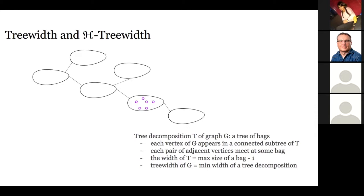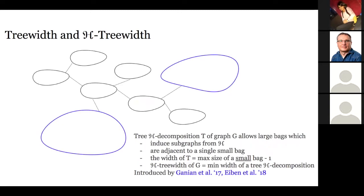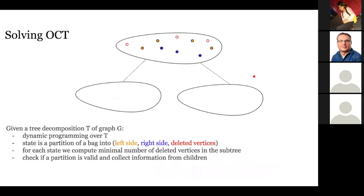The simplest idea is to allow special bags that can be arbitrarily large, as long as their induced subgraphs belong to class H, and each such special bag is adjacent to a single regular bag. We define the width of a tree-H decomposition as the maximal size of any regular bag minus one. We define H-tree width as the minimal width of such a decomposition.